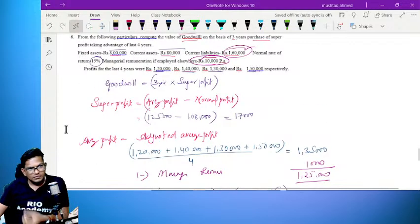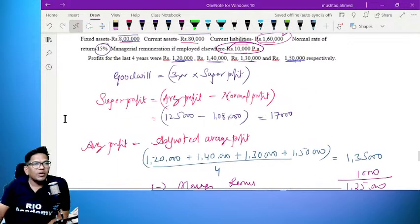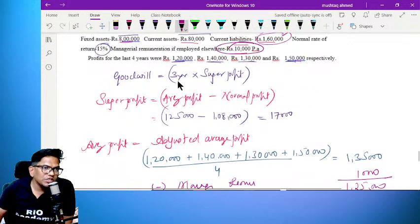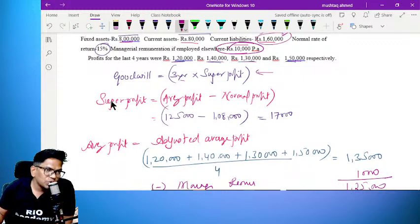Goodwill is equal to 3 years into super profit. Super profit is equal to average profit minus normal profit.